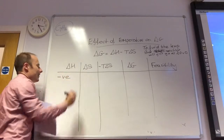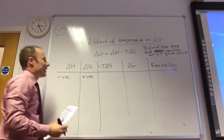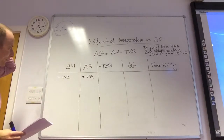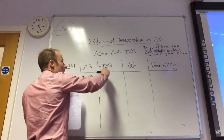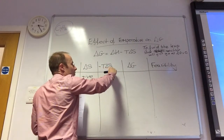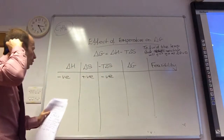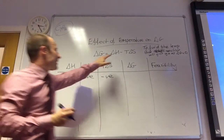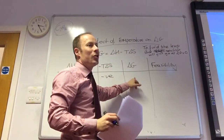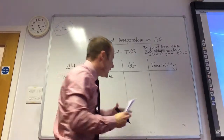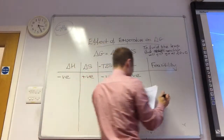First of all, if delta H is negative and delta S is positive — that's the first scenario. Delta H is negative and delta S is positive. What sign will minus T delta S have? Negative. Brilliant. Therefore, that whole value is negative. What must delta G's sign be? Negative. Therefore, feasibility: it is always feasible.